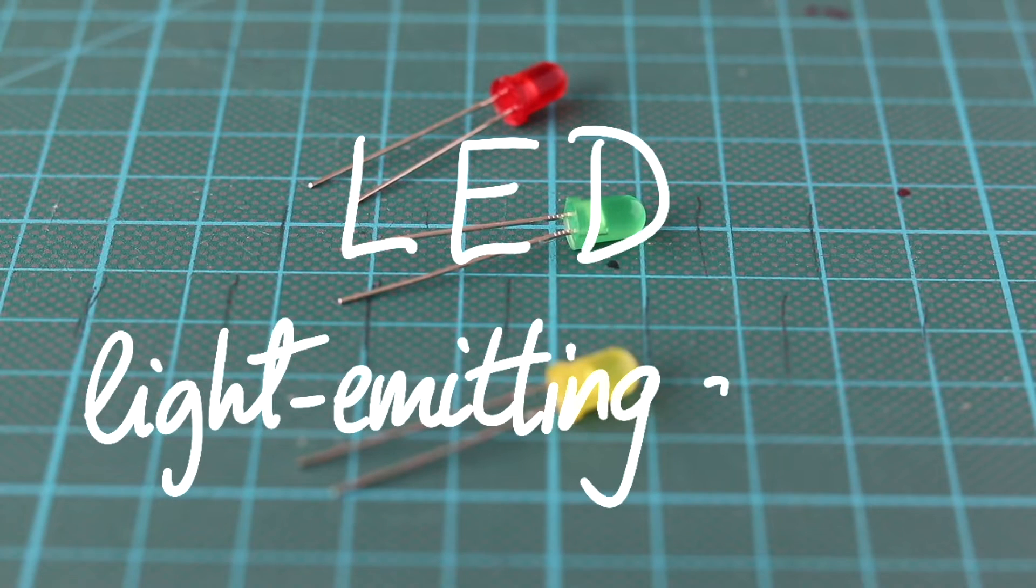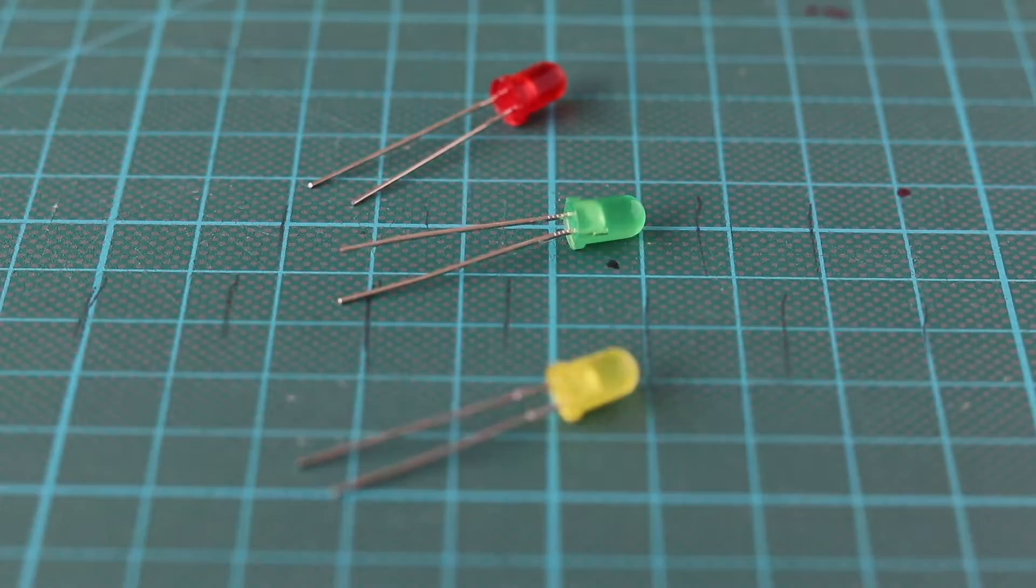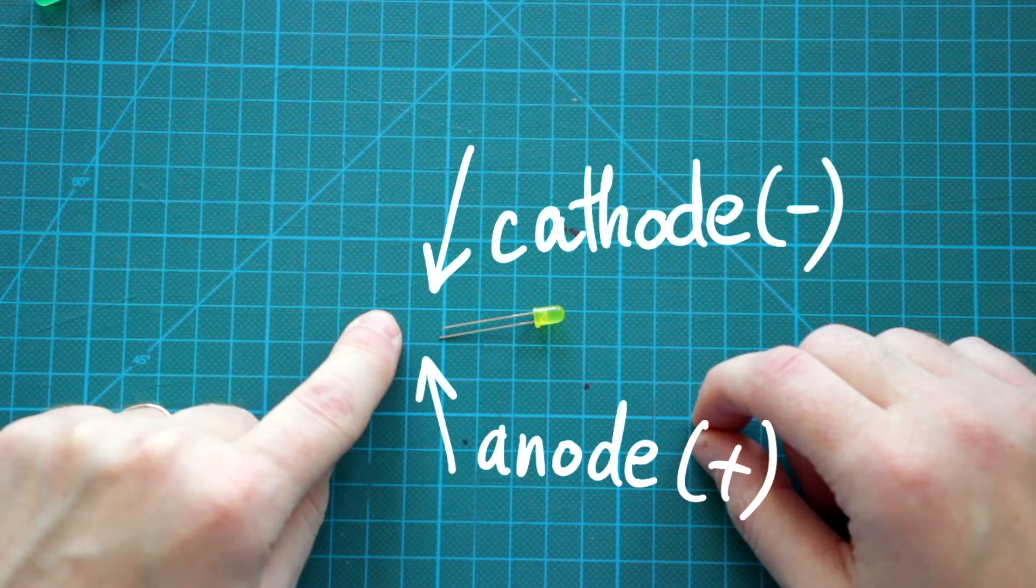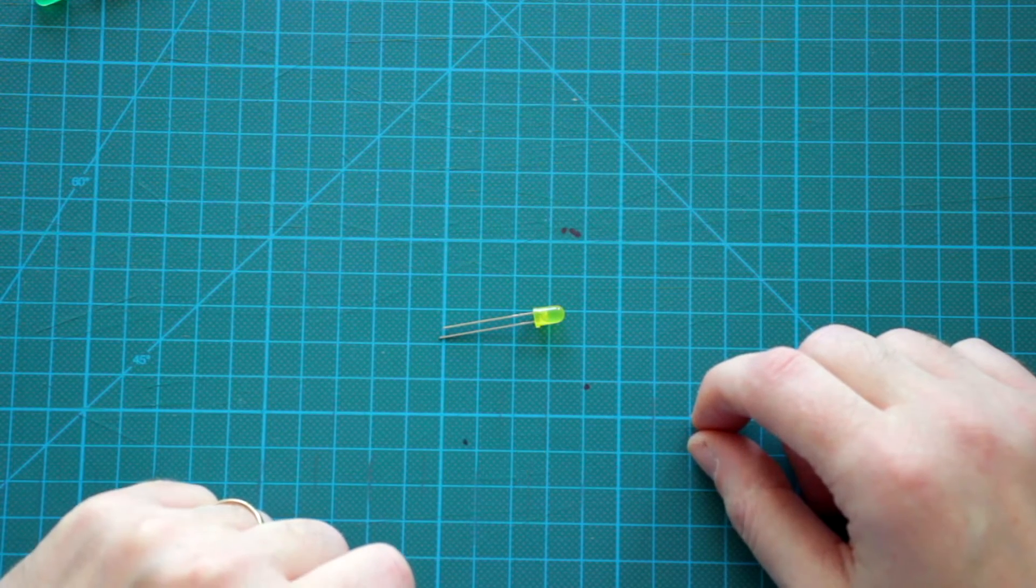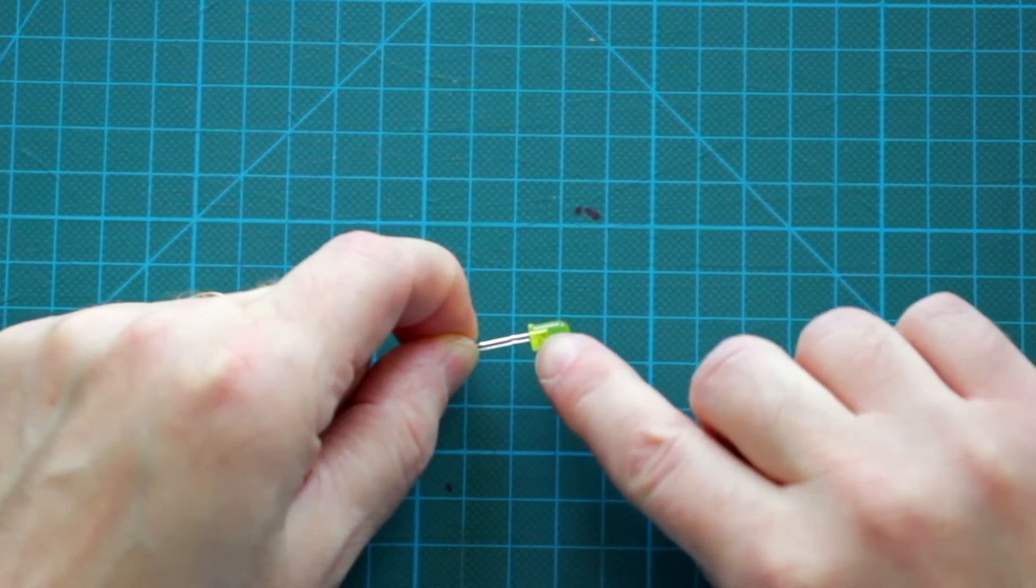And as the name suggests, it lights up when a current flows through it. On an actual LED, the anode terminal is a little longer than the cathode. Also, the cathode is indicated by a flat spot.